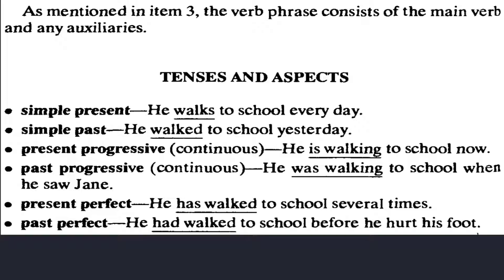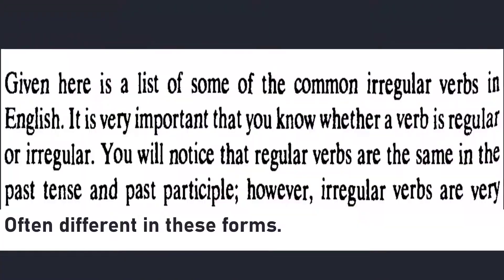Here, present and past tense have been brought together for comparison. This is not a new association — if you look at the examples given here, you will get a good understanding of tenses. Given here is a list of some of the common irregular verbs in English.